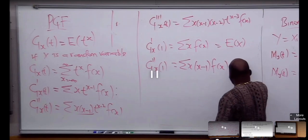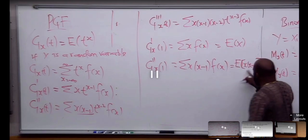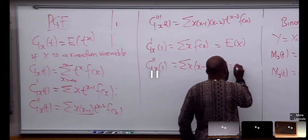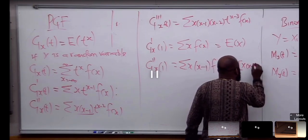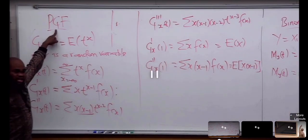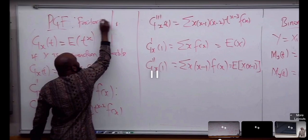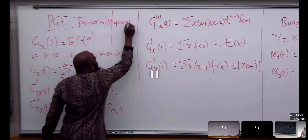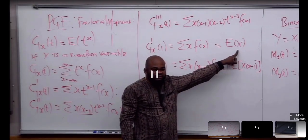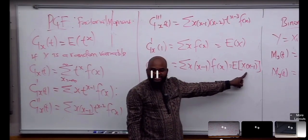When you plug in 1 to the second derivative, you're going to have the expectation of X times X minus 1. Another name for PGF-derived moments is factorial moments. The first factorial moment is the mean. The second factorial moment is E[X(X-1)].